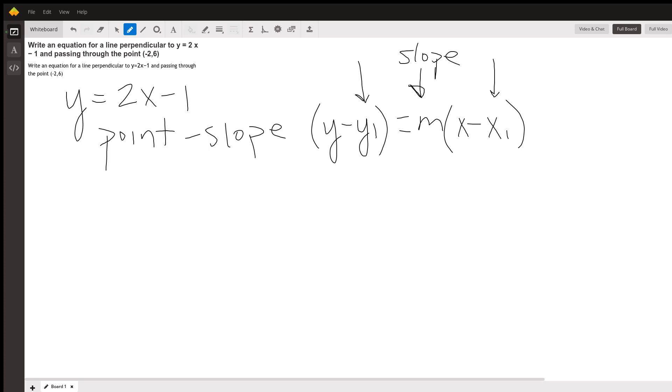And you do, because the slope of the line that you need is going to be negative one-half. The x-coordinate that you need to substitute in is negative 2, and the y-coordinate that you need to substitute in is 6.